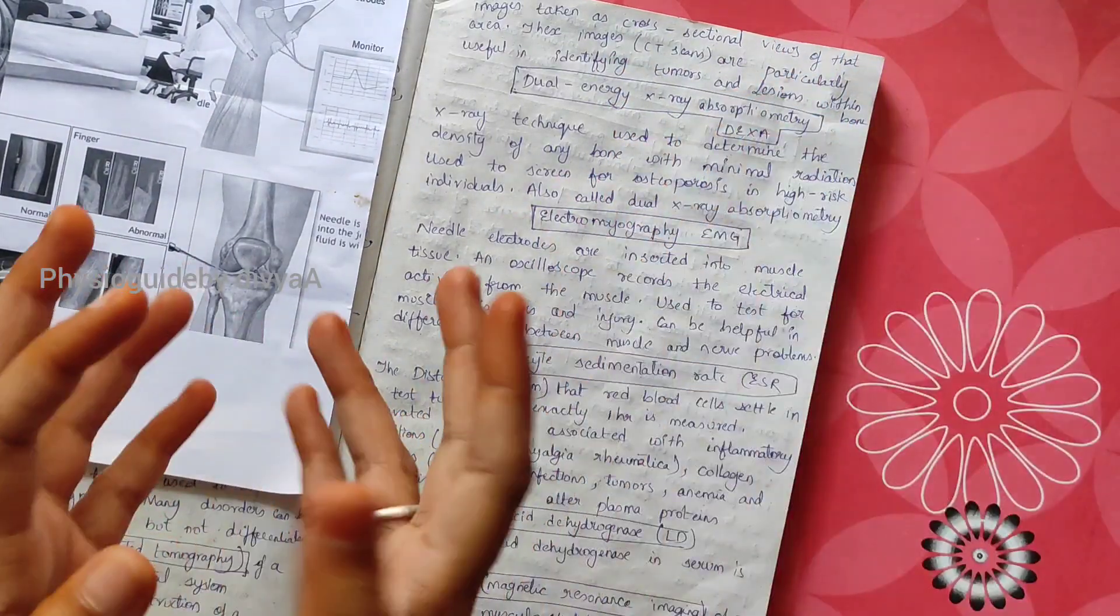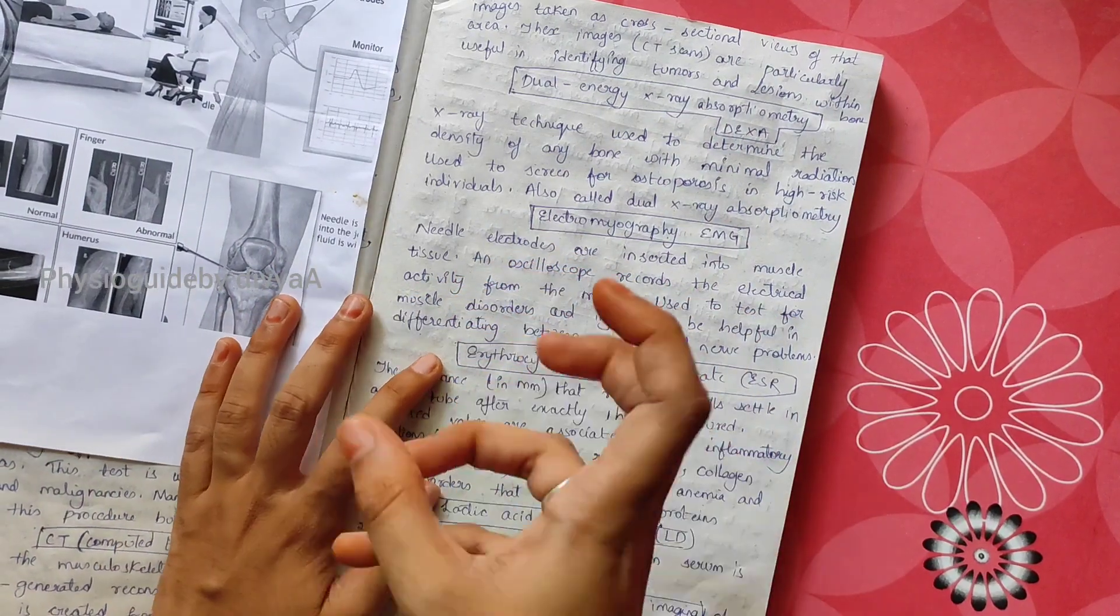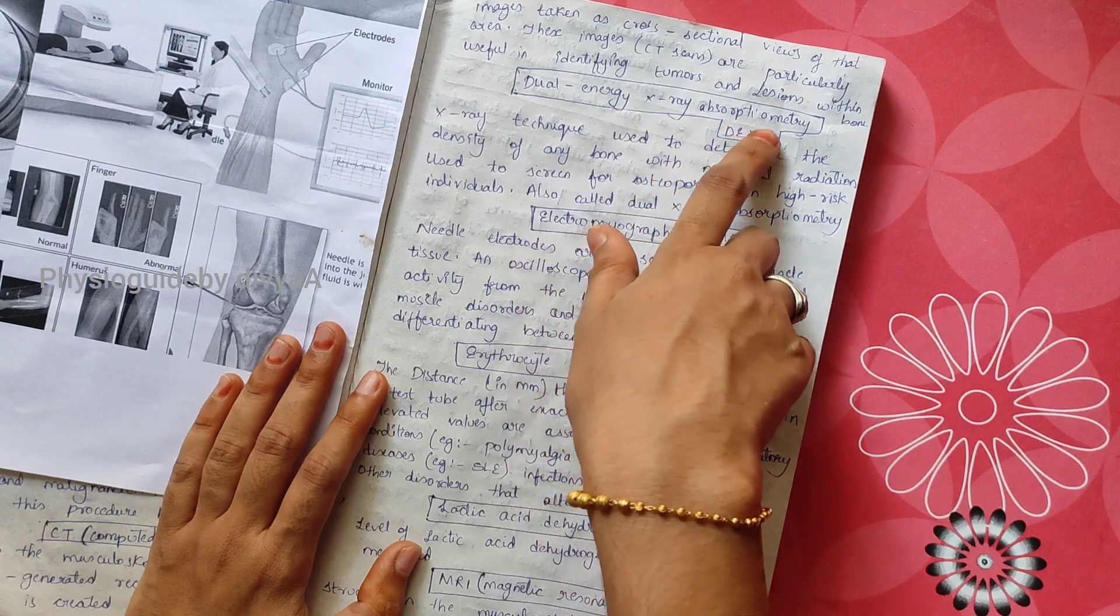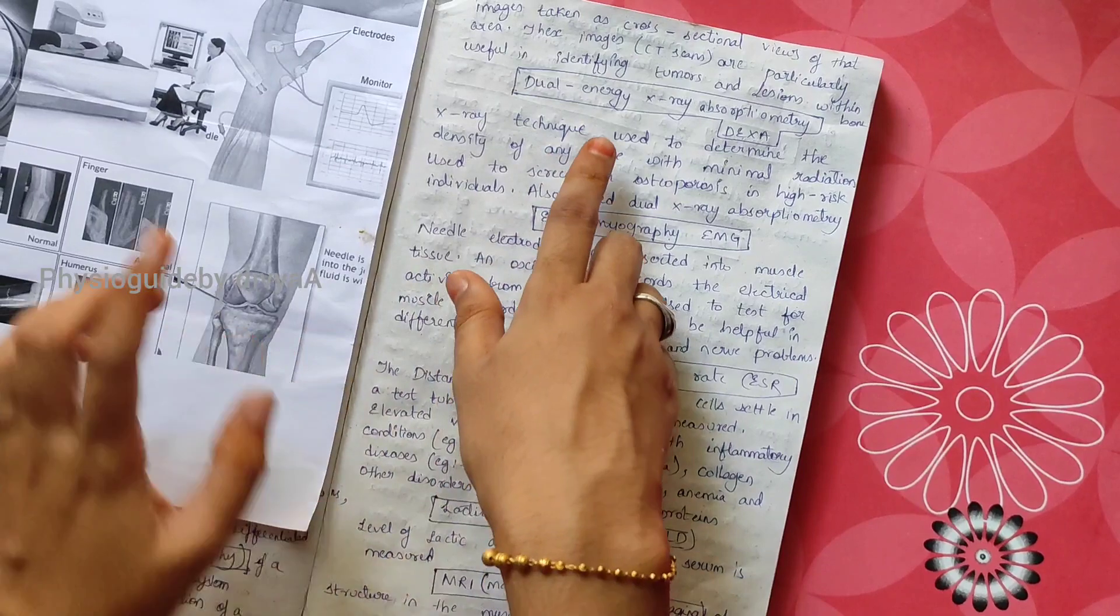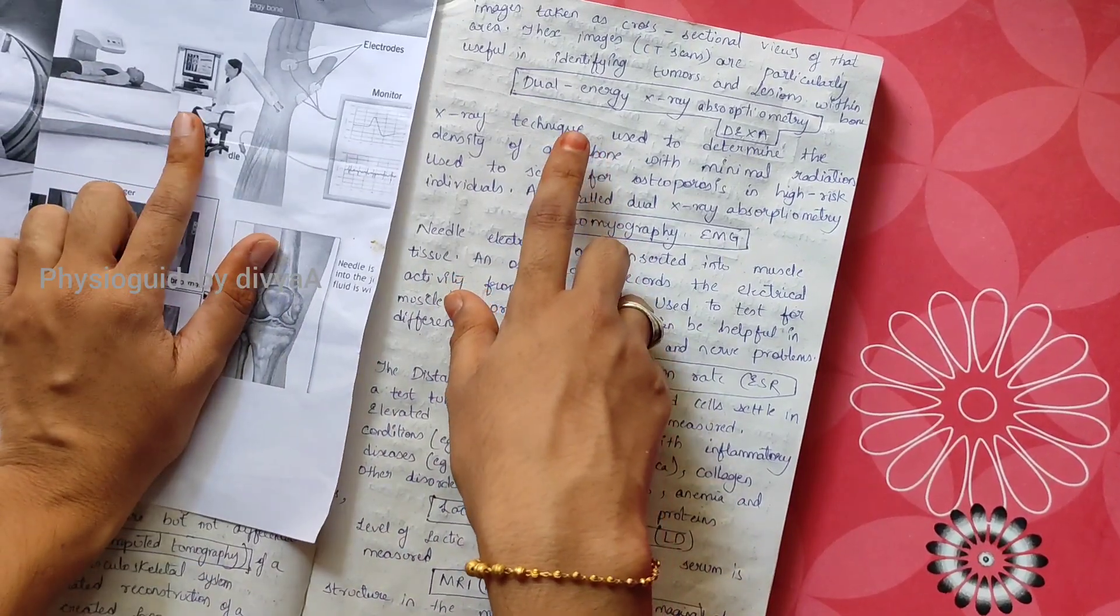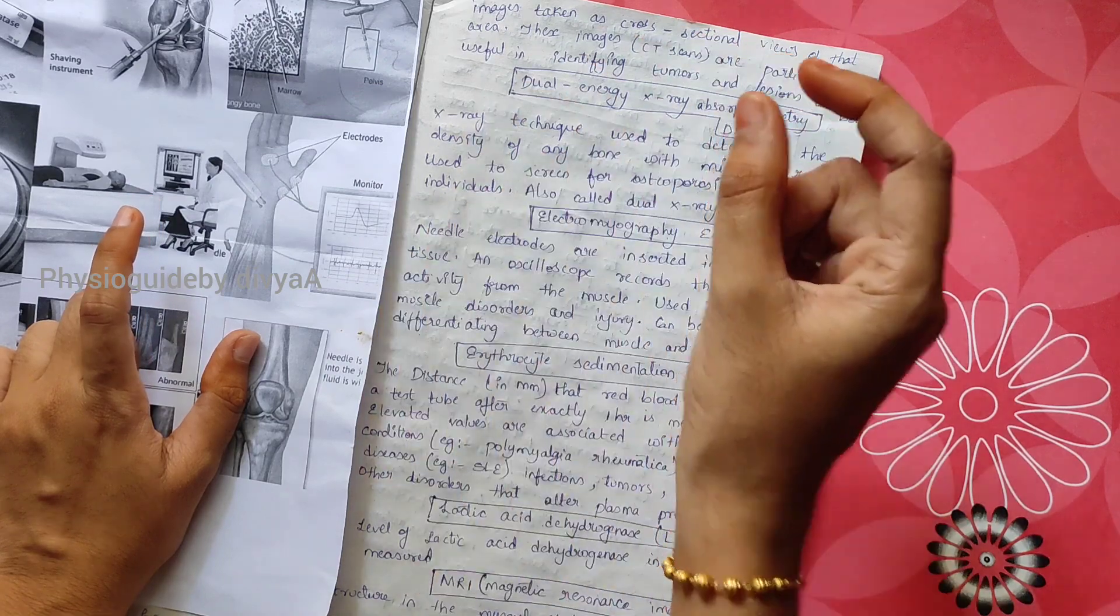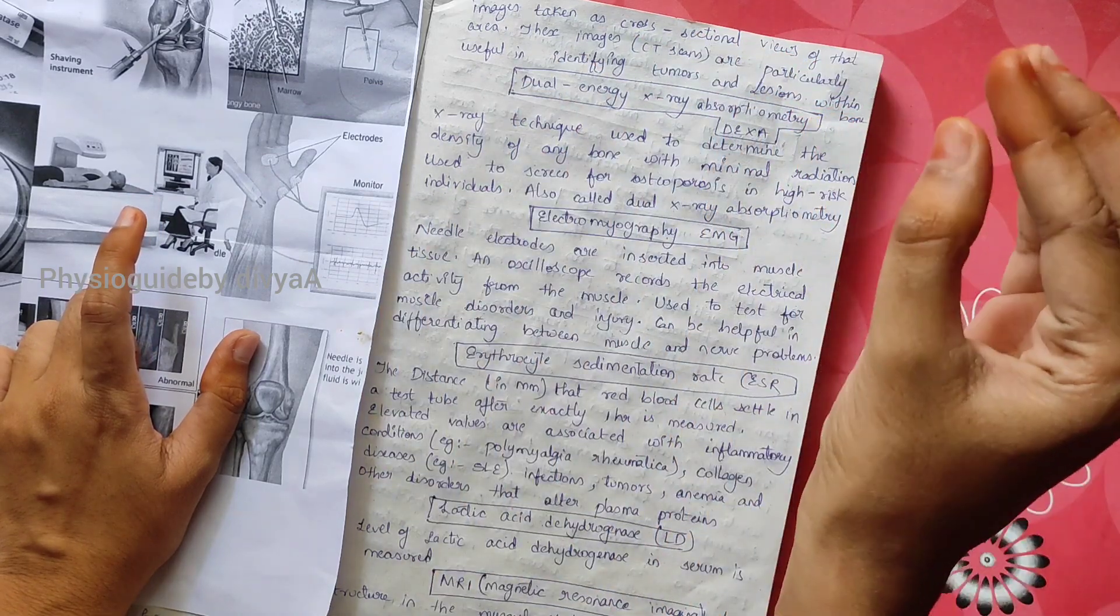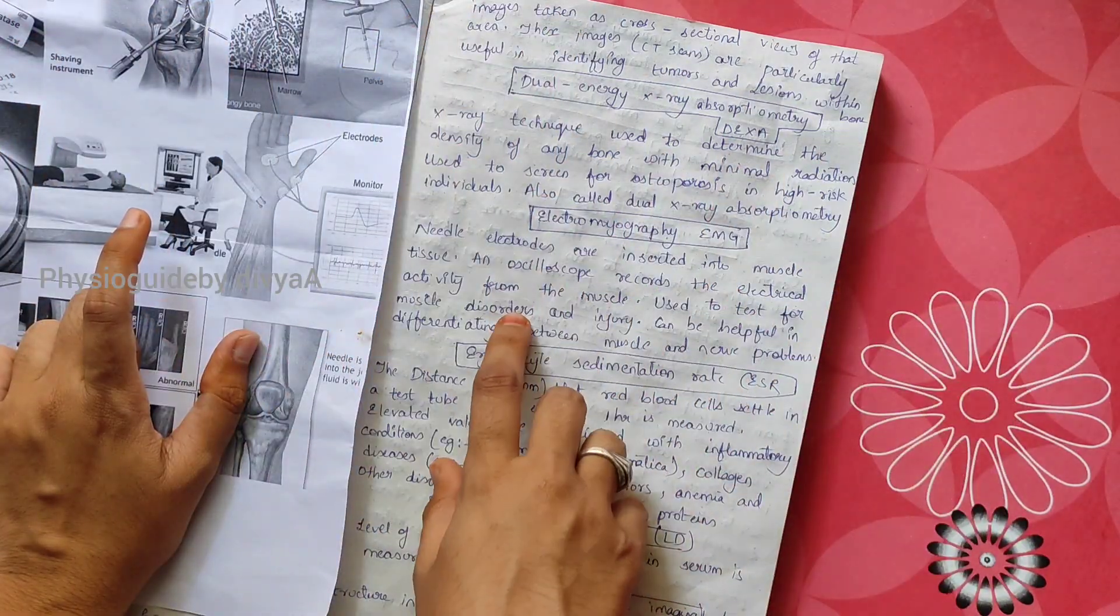Dual energy X-ray absorptiometry, or DEXA: see this image. This is an X-ray technique used to determine bone density with minimum radiation. It's used to screen for osteoporosis in high-risk individuals.